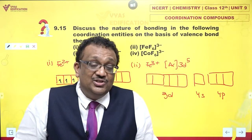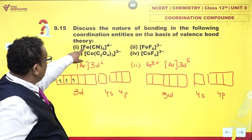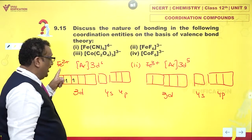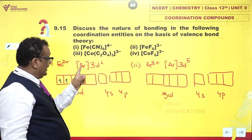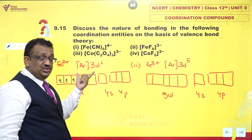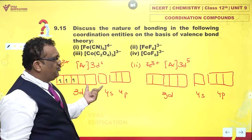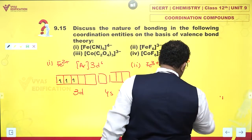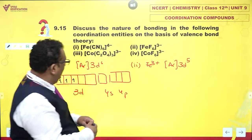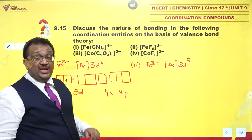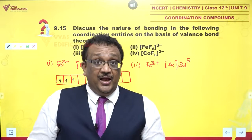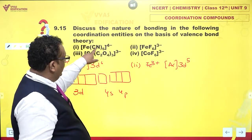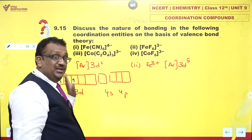Now I must consider the field strength of the ligand. When I am filling the electrons, I must be very careful. If I have strong field ligand like cyanide, it is strong field, so I should pair the electrons.